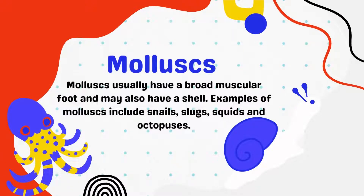Molluscs usually have a broad muscular foot and may also have a shell. Molluscs include snails, slugs, squids, and octopus.